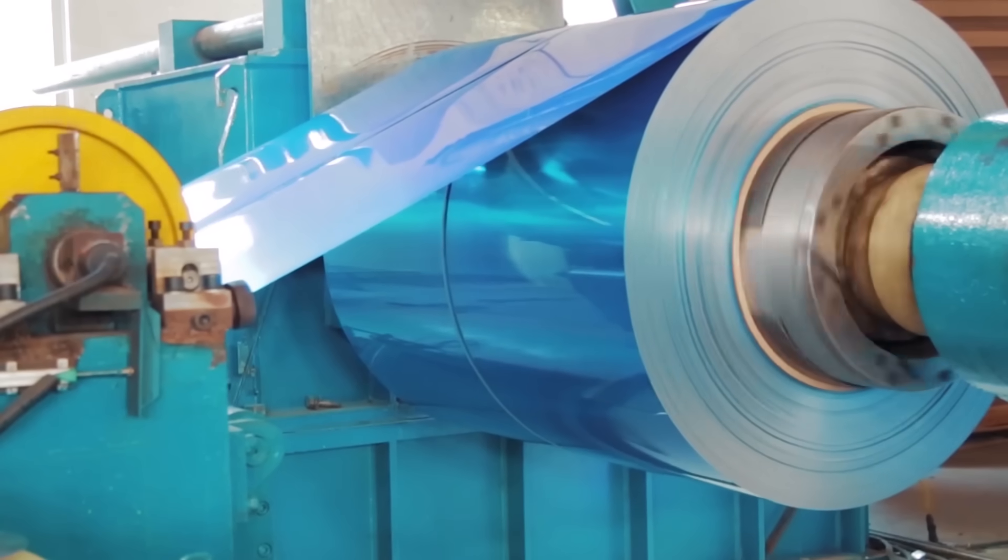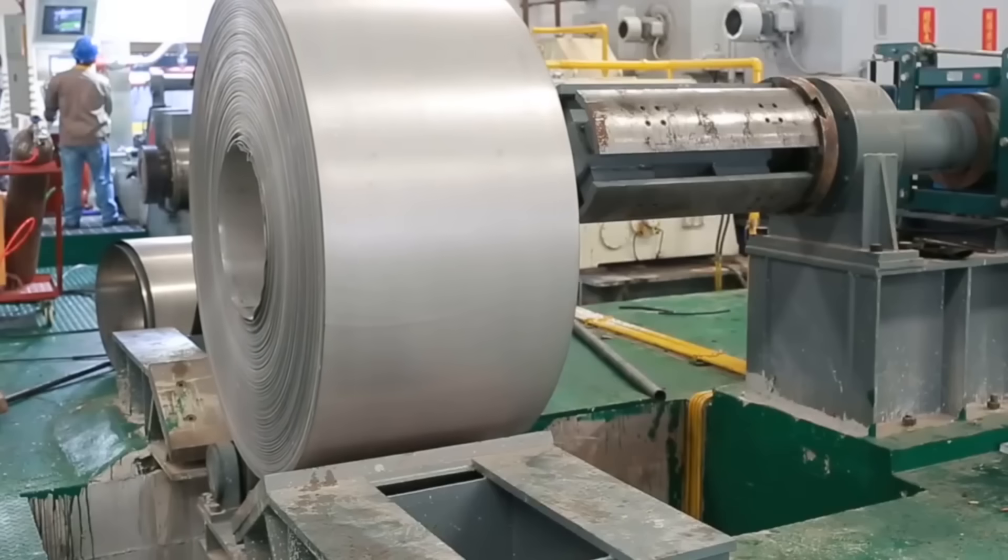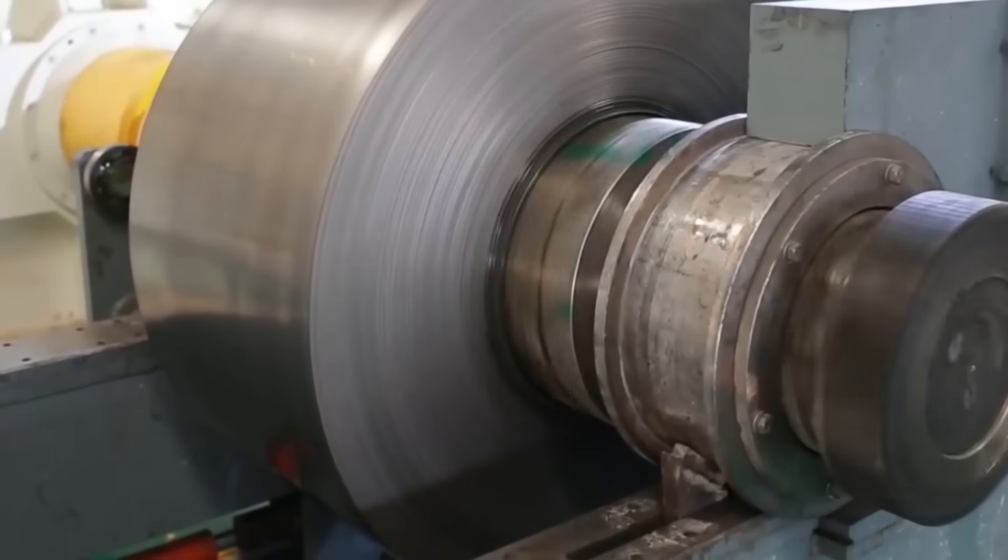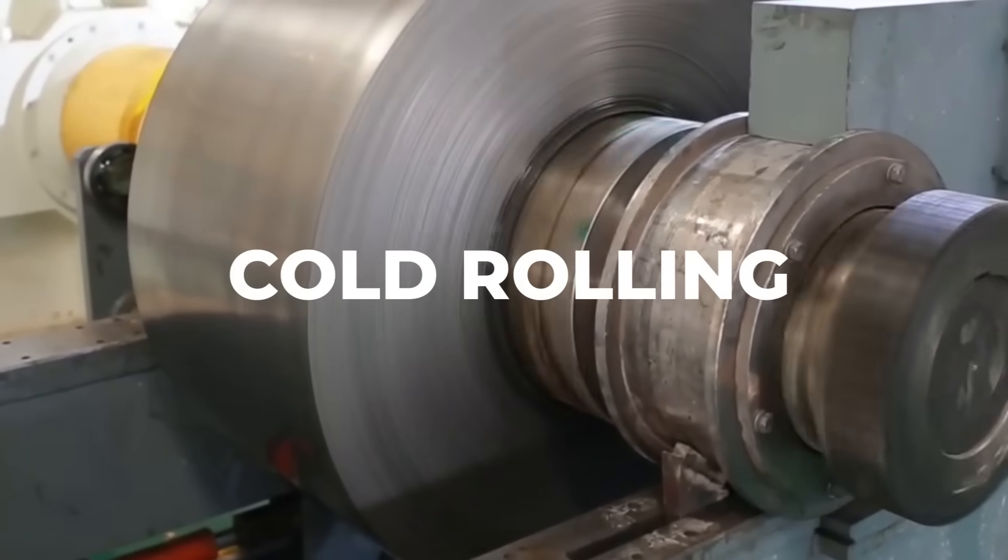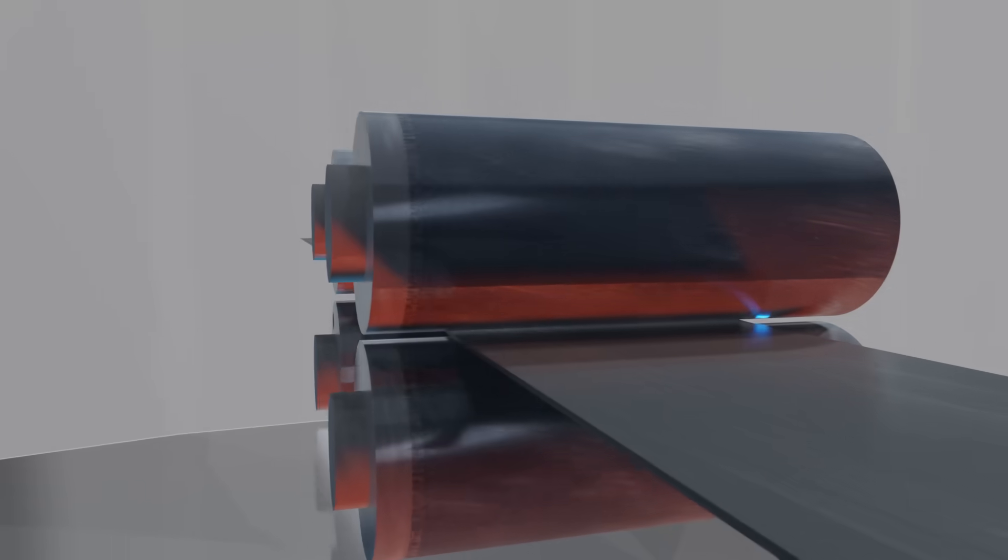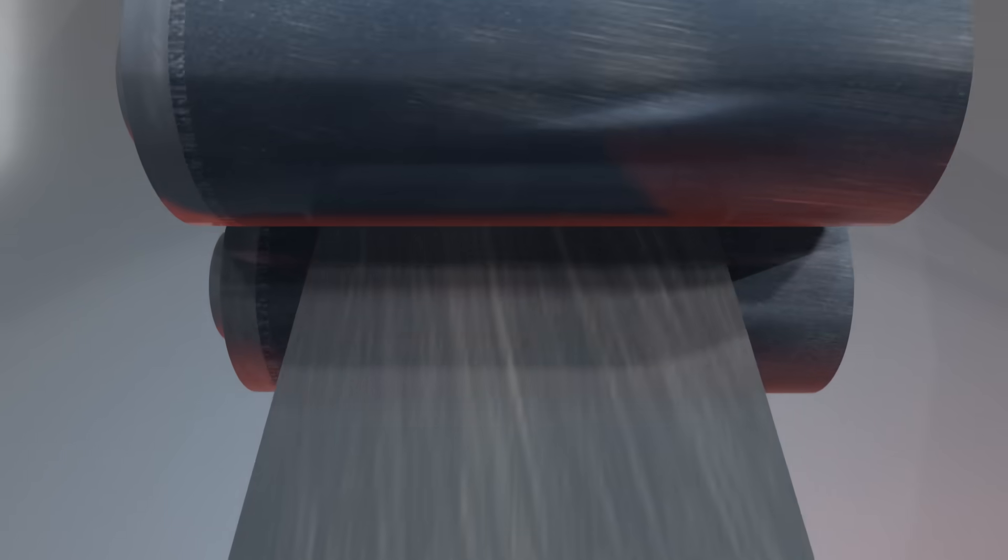But in order to really improve the strength of each weld, another process has to be done. You see, when Starship's stainless steel is produced in its factory, it goes through a process called cold rolling. This involves passing the metal through a series of rollers, which compress it down and stretch out the grains in the metal. This makes the material stronger and harder.